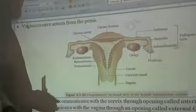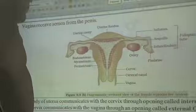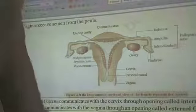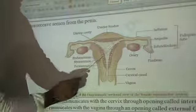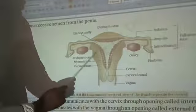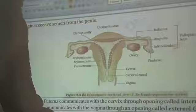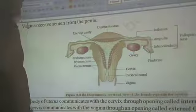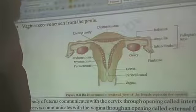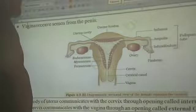The female reproductive system mainly contains the ovary, fallopian tube, uterus, cervix, and vagina. Apart from this, the external genitalia is also a part of the female reproductive system.